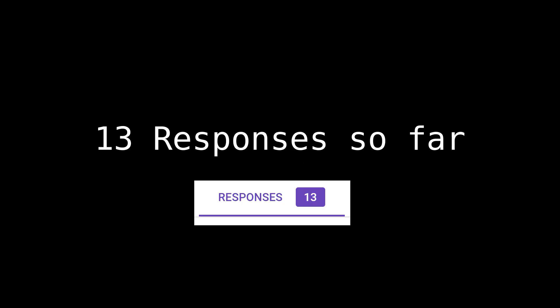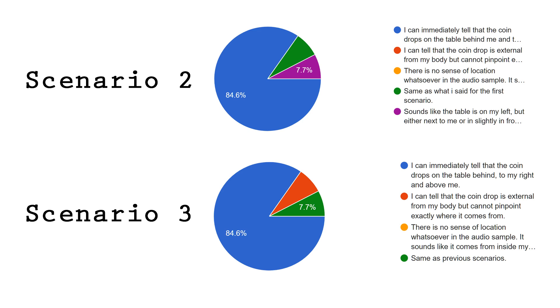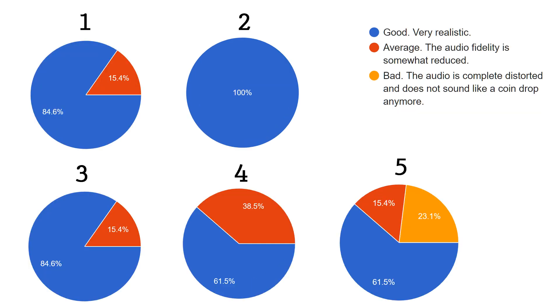For each of the scenarios, there is one question about the accuracy of the audio and another one about the audio quality. I was able to collect 13 responses. Given how socially unpopular I am, this is a very impressive number. As expected, the scenarios where the audio source comes from the front have the most inconsistent results. In scenarios one, four, and five, most people cannot tell where the audio comes from. In scenarios two and three where the audio source is behind the listener, most people can immediately pinpoint the location of the sound source. Most people say that the audio is realistic in all scenarios except for the fourth one where the coin is behind the couch and the fifth one where the room is four times bigger.